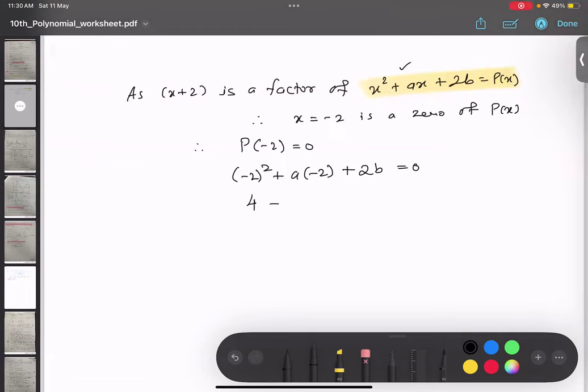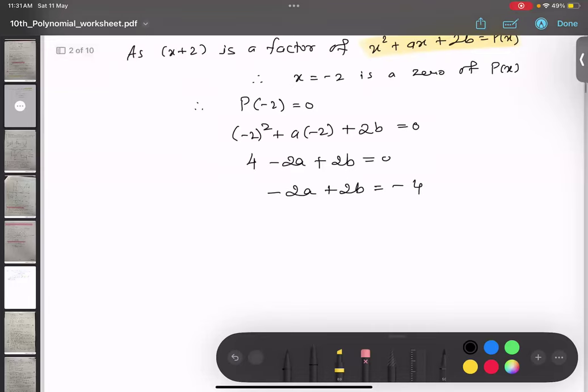Therefore, 4 minus 2a plus 2b equals zero. I will shift this 4 to the other side: minus 2a plus 2b equals minus 4. I can simplify by dividing by 2 both sides, so minus a plus b equals minus 2. This is my first equation.